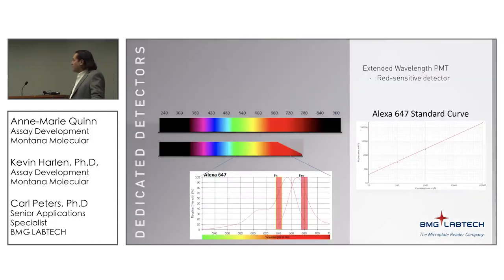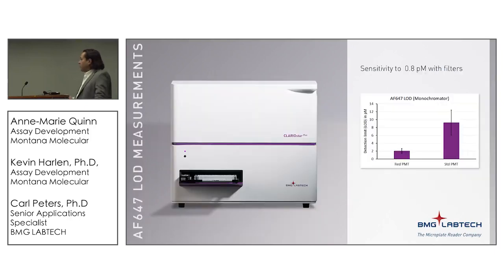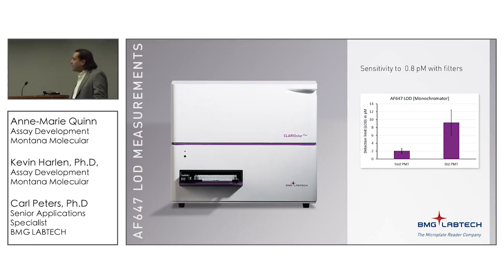The last feature to discuss is the extended wavelength PMT. Not only is it useful for detecting far red-shifted fluorophores, but traditional PMTs show a drop-off in performance even for fluorophores that aren't extremely far red, such as Alexa 647. The new extended wavelength PMT shows very good performance over a wide concentration range, and comparing it with the standard PMT we have a much better LOD performance — with filters you can get down to a sensitivity of 0.8 picomolar for Alexa 647.